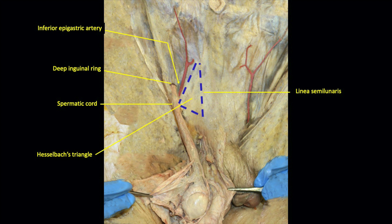Hesselbach's triangle is defined by the lateral border of the rectus sheath (the linea semilunaris), the lower portion of the inguinal ligament, and the inferior epigastric artery. The triangle is generally described when the anterior abdominal wall is reflected and examined from its posterior view.